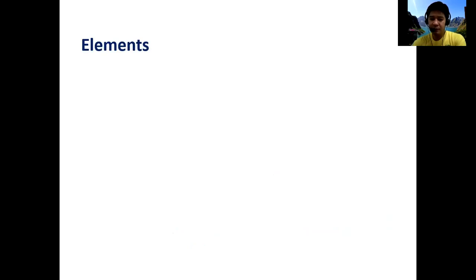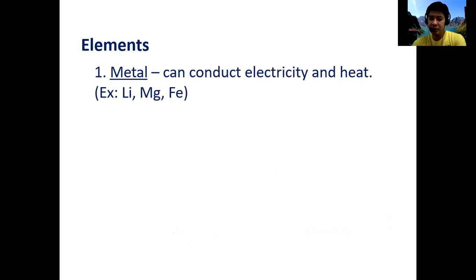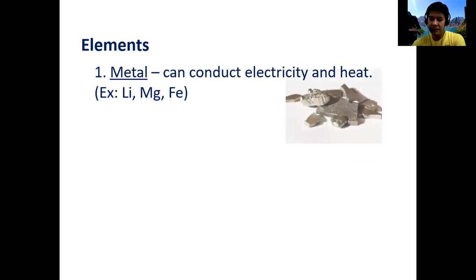Now let's focus on elements. The first type is metal — metals can conduct electricity and heat. In our periodic table, the majority of elements are metals, and these are on the left side. The periodic table is divided by a stair-like formation of metalloids starting with boron. So the left side of the periodic table consists of metals — for example, lithium, magnesium, and iron.